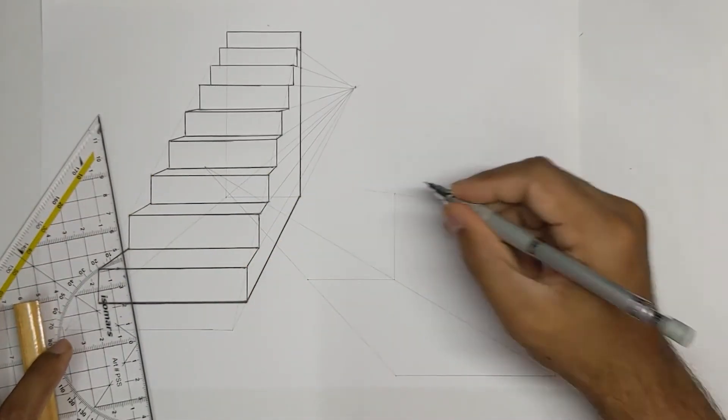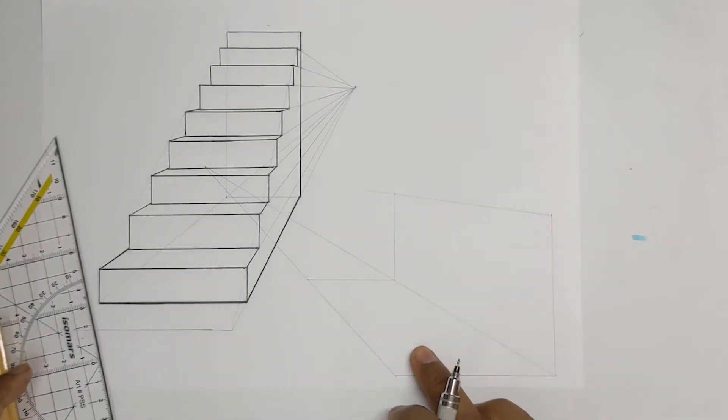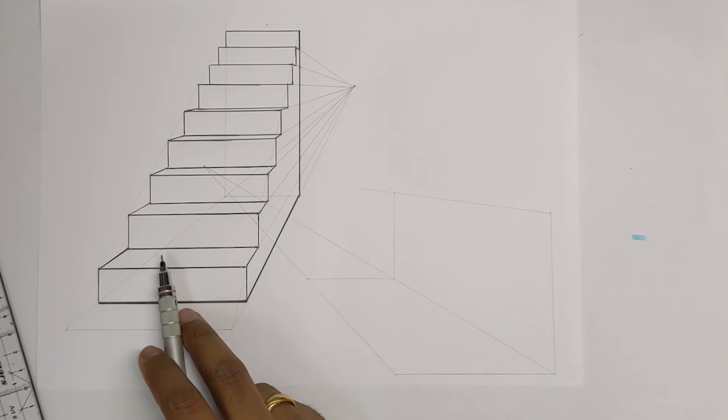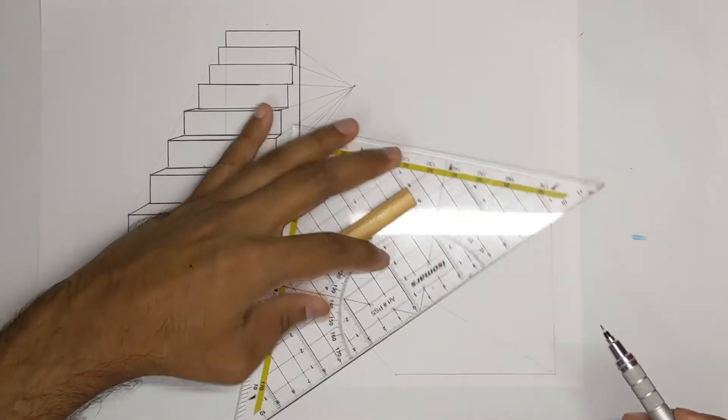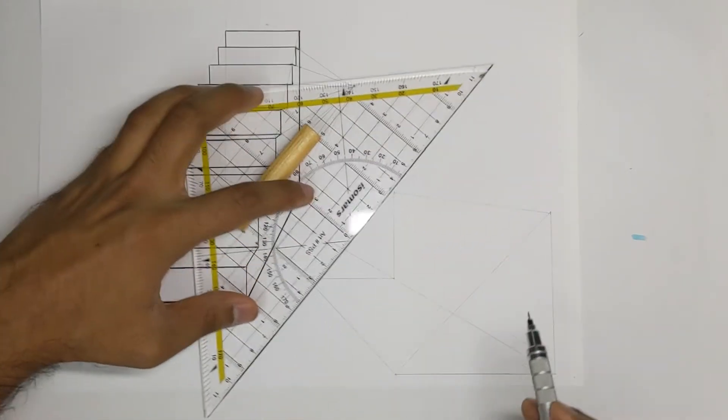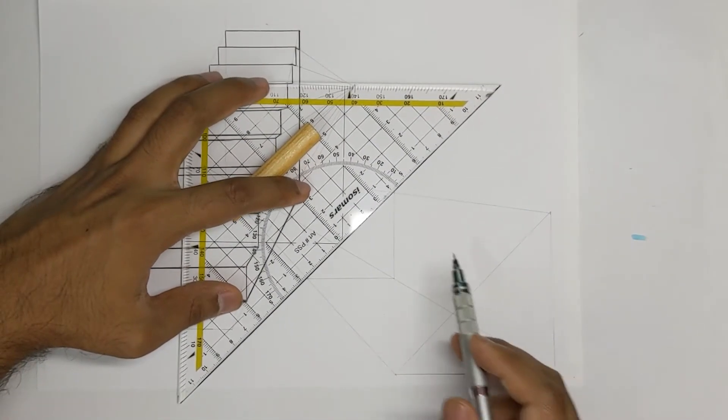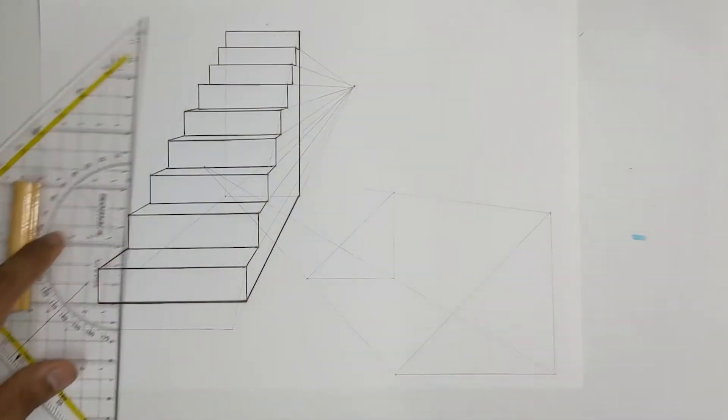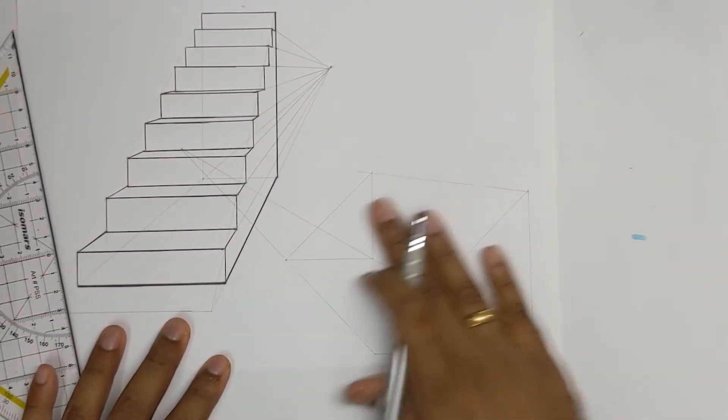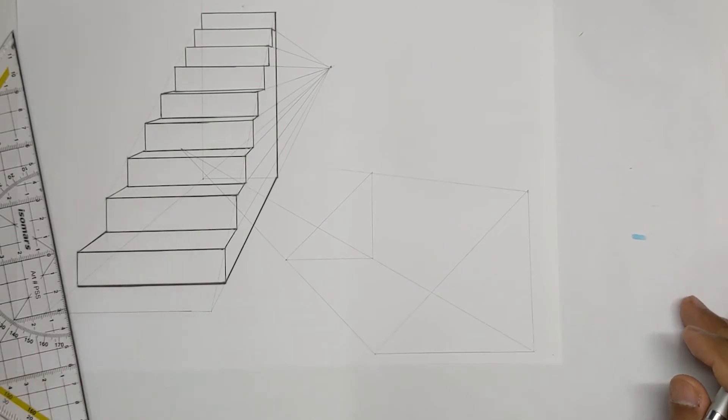Okay so we have the back wall here, the ground plane over here and as we did for this example here we need to draw a wedge shape. So just connect both these points to get a wedge shape. Great so we have done the basic construction to draw stairs in one point perspective.